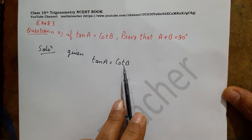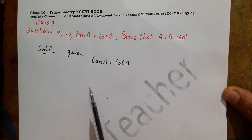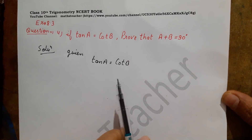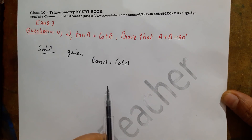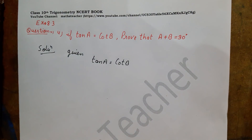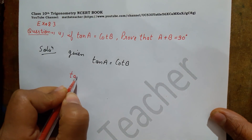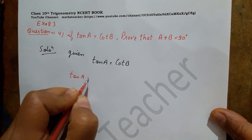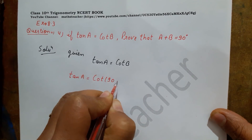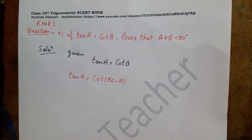As I mentioned from the start, we use the complementary angle identity. We change tan using its related identity: tan A equals cot(90° minus A). So A's complementary is 90 minus A, and similarly cot A equals tan(90° minus A).